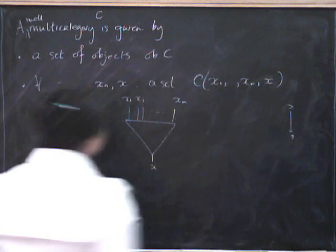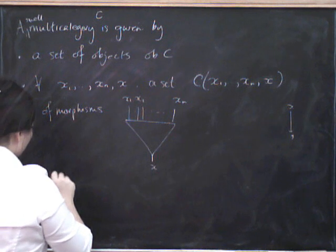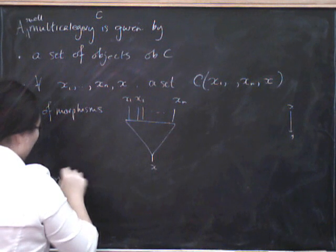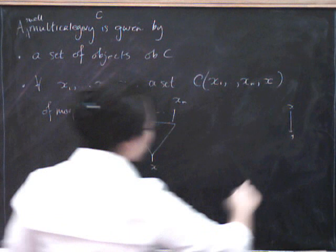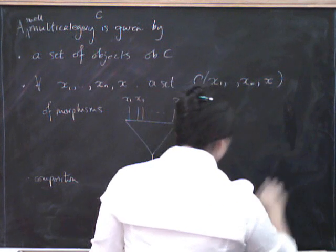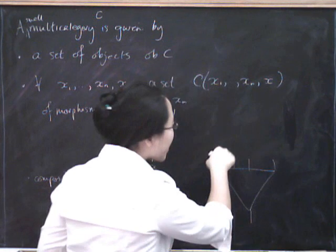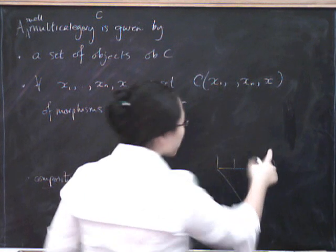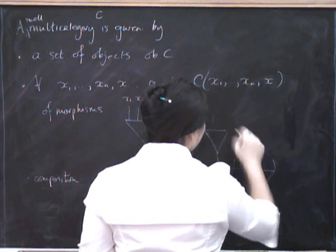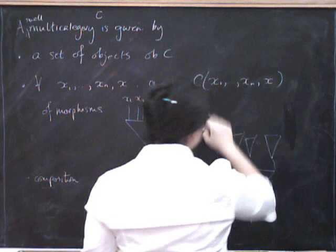So now you can ask yourself how you can possibly compose these things. Well, a composition looks like this. I'm going to draw it over here so that I've got a little bit of space. You take one of your multi-arrows, and then you can plug in one arrow at each of these source places. So you can plug in an arrow here, an arrow here, an arrow here, and so on, all the way up to an arrow here.